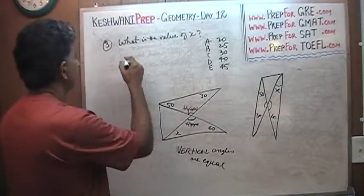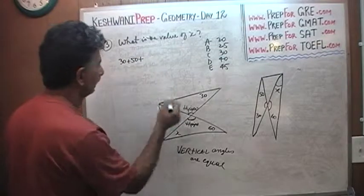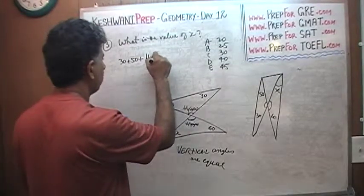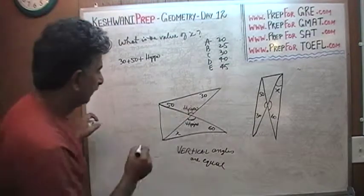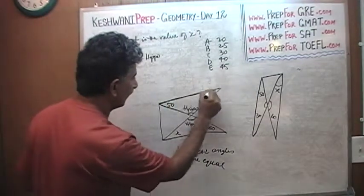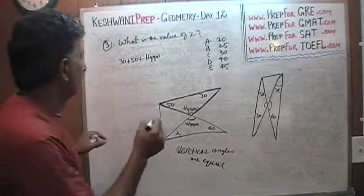So here, 30 degrees plus 50 degrees plus this hippo guy equals 180. We know that because it is a triangle. This forms a triangle. Right here. This is a triangle. And we know that the sum of the angles in a triangle is 180.